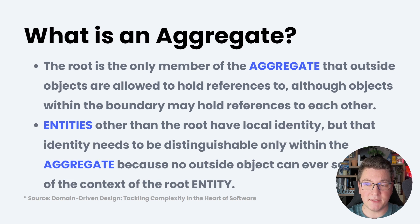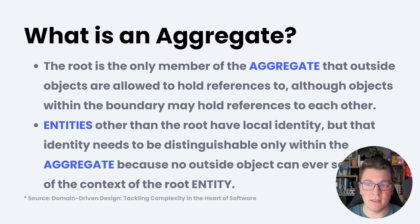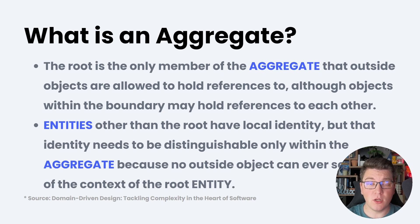Another way to look at it is in terms of identity. Aggregate roots have global identity inside our domain, while entity objects inside an aggregate have local identity relative to the aggregate itself.